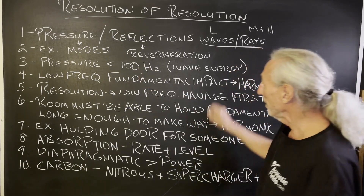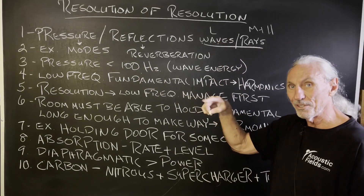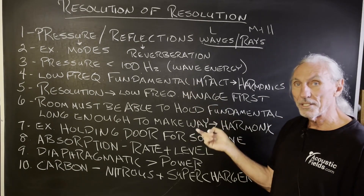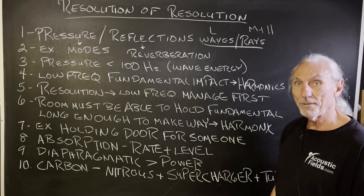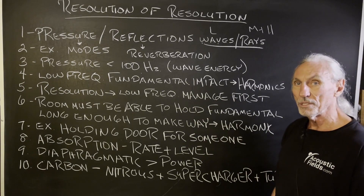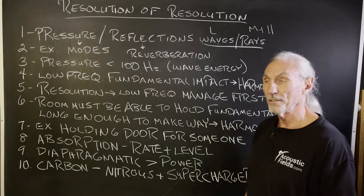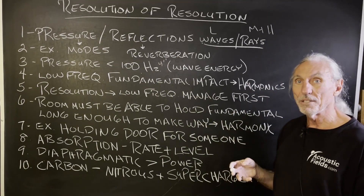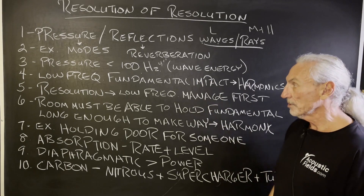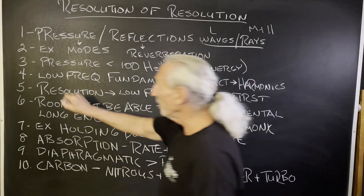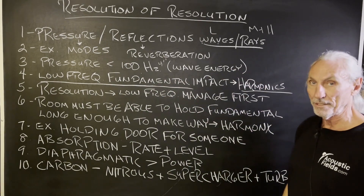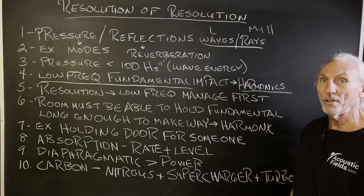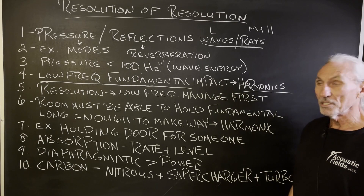Pressure less than 100 — it's wave energy. The reason we use 100 to 125 as breakpoints is because that's the frequency breakpoint for treatment. Everything below 100 takes a completely different form of treatment than everything above. Foam can start at 100 cycles — our 4-inch deep foam could start at 100. But when you get down into the 30s, 40s, 50s, 60s, you need special technology. The low frequency fundamental has an impact on the harmonics — they're all related. The mom and dad are the fundamentals and the kids are the harmonics: first order, second order, third order.